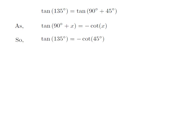Let us apply the above identity for tangent of 135 degree. Here, x is 45 degree, so tangent of 135 degree is equal to minus cotangent of 45 degree.